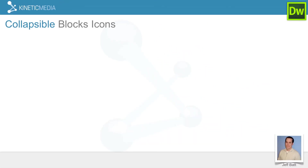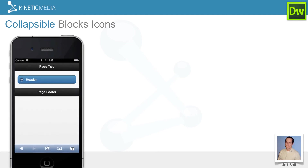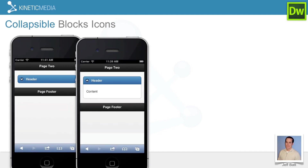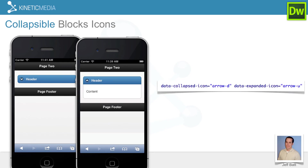Now let's talk about block icons. By default it's a plus and a minus, but you can change those icons and their positions. You add data-collapsed-icon equals whatever icon you want — arrow-d, arrow-u, and so on. There are two attributes: data-collapsed-icon sets the icon shown before expanding, and data-expanded-icon sets the icon shown when expanded. It will automatically toggle between them for you.